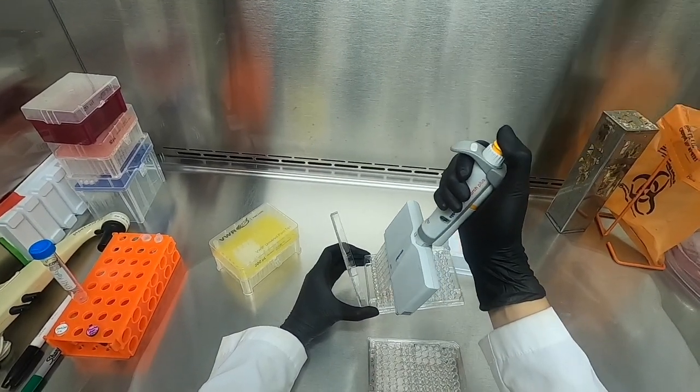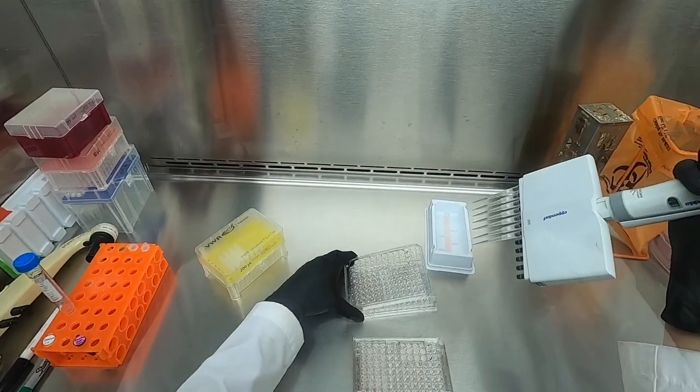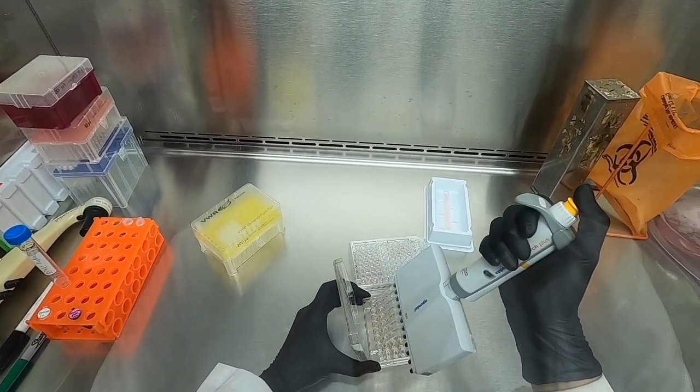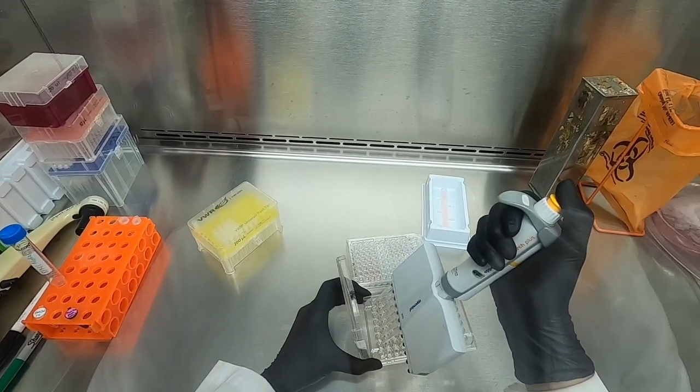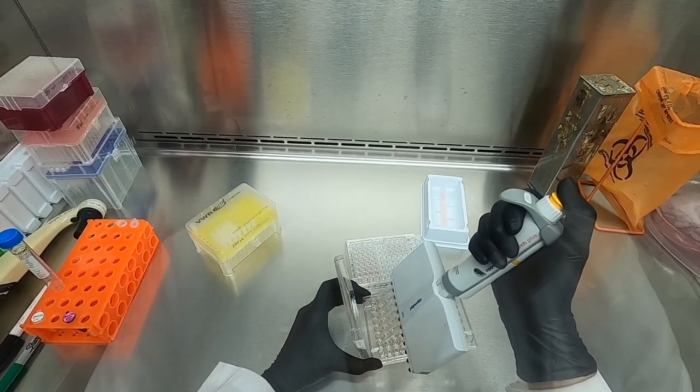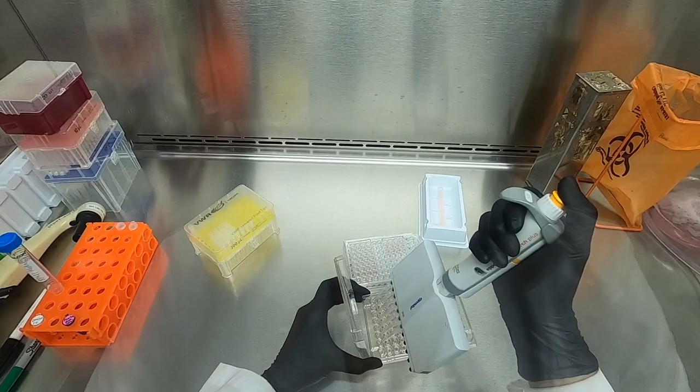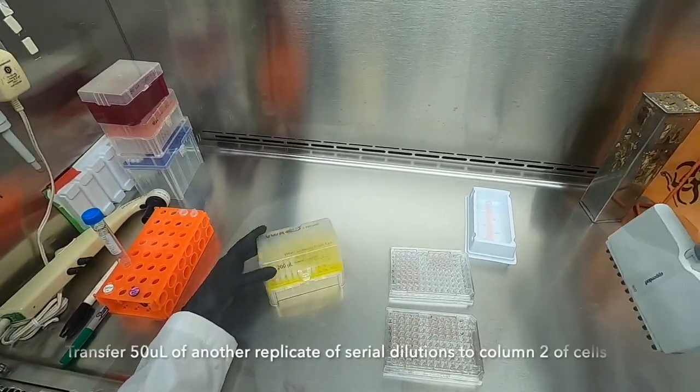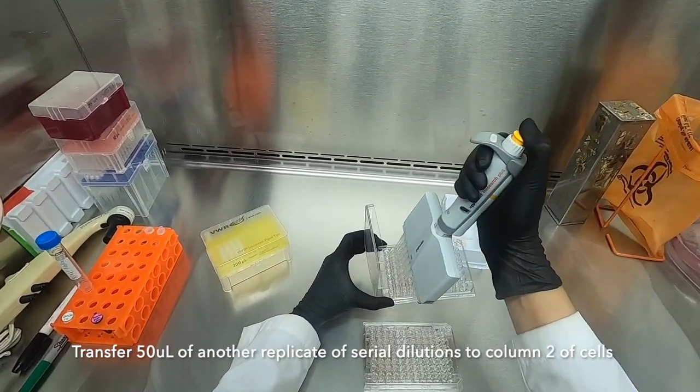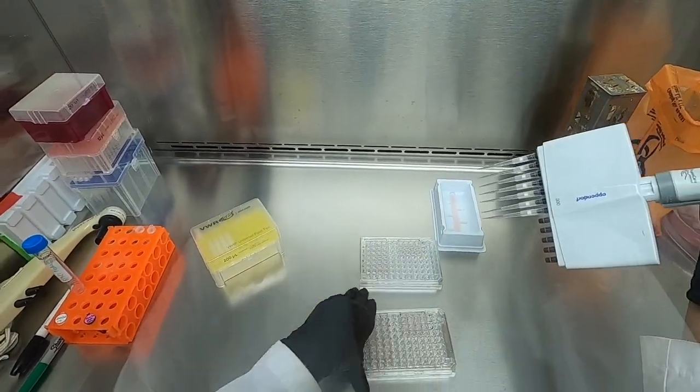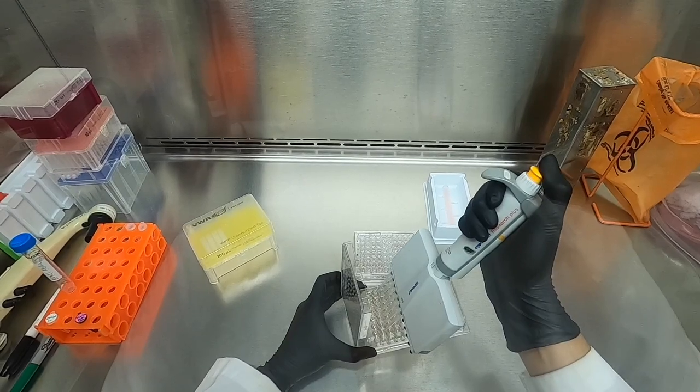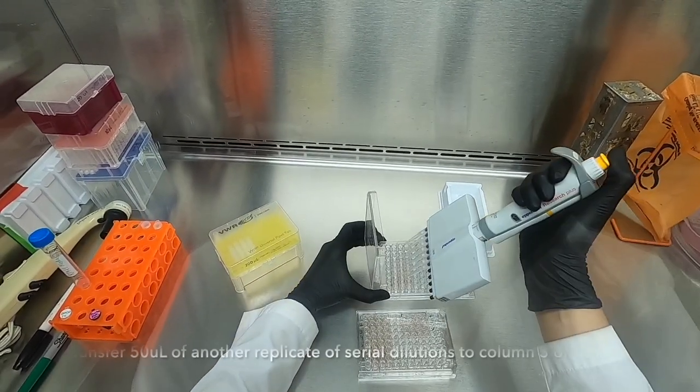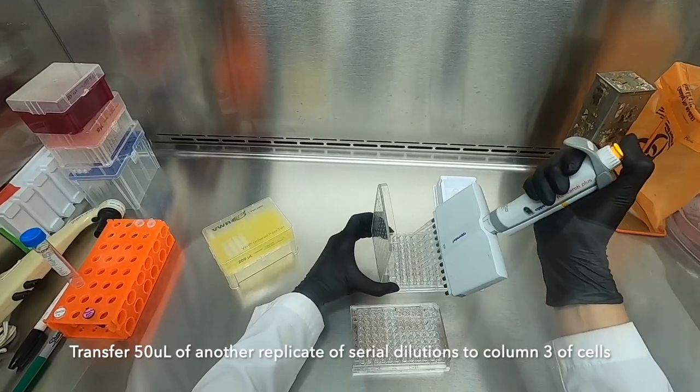We had previously established that the highest concentration in our capsaicin gradient was 200 micromolar and our lowest concentration was 3 micromolar. If we're adding 50 microliters of this gradient to 100 microliters of media, this means that our highest concentration is now 66 micromolar and our lowest concentration is 1 micromolar, which matches perfectly with the concentration gradient provided in your manuals.